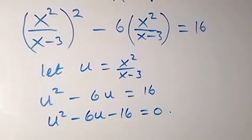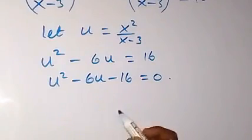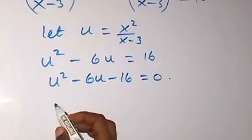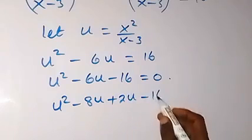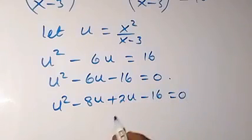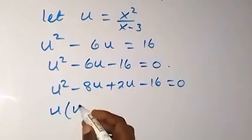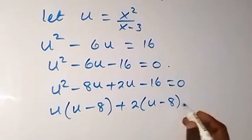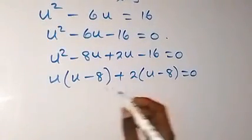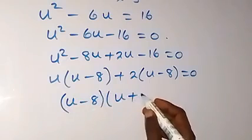We factorize this. The two factors are −8 and +2, since −8 + 2 = −6 and −8 × 2 = −16. So we write: u² − 8u + 2u − 16 = 0. Grouping: u(u − 8) + 2(u − 8) = 0.